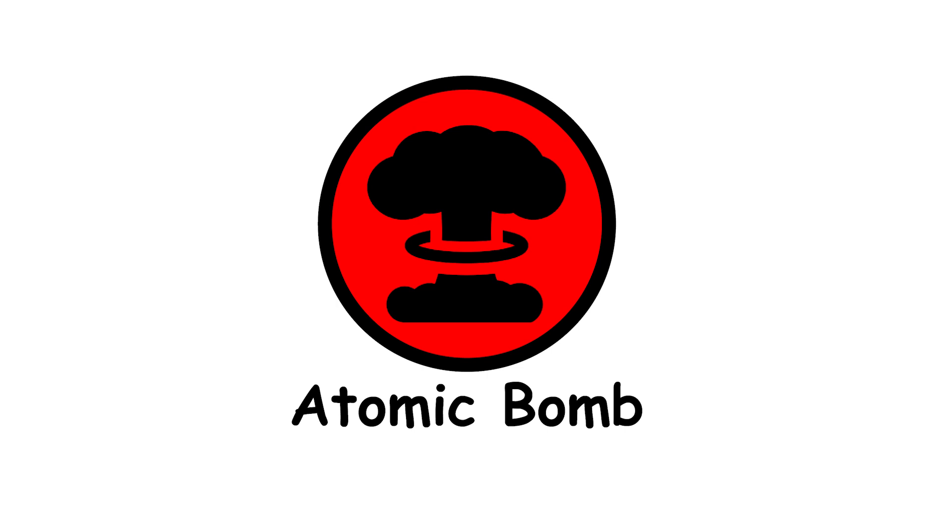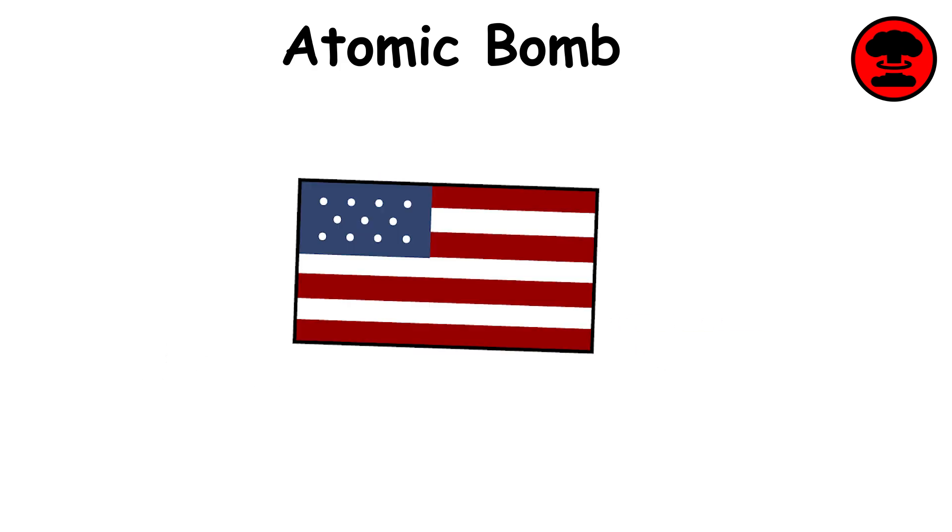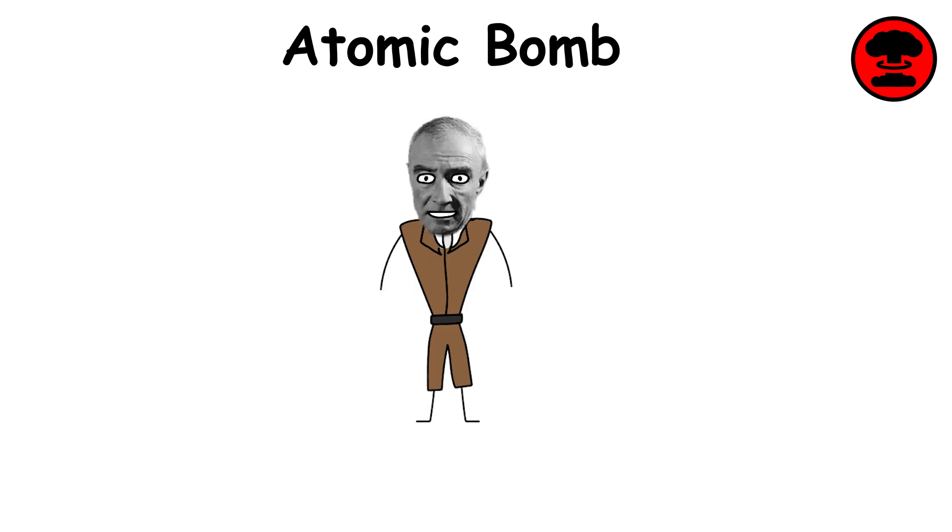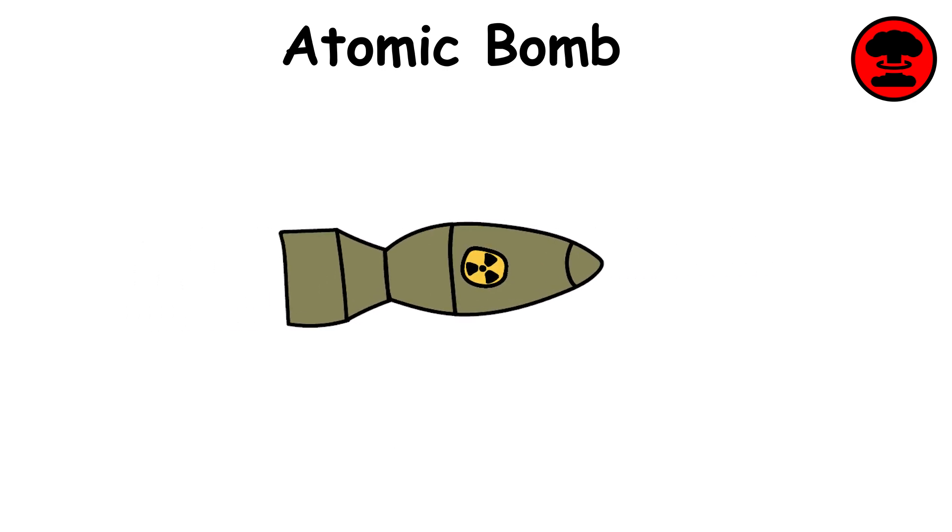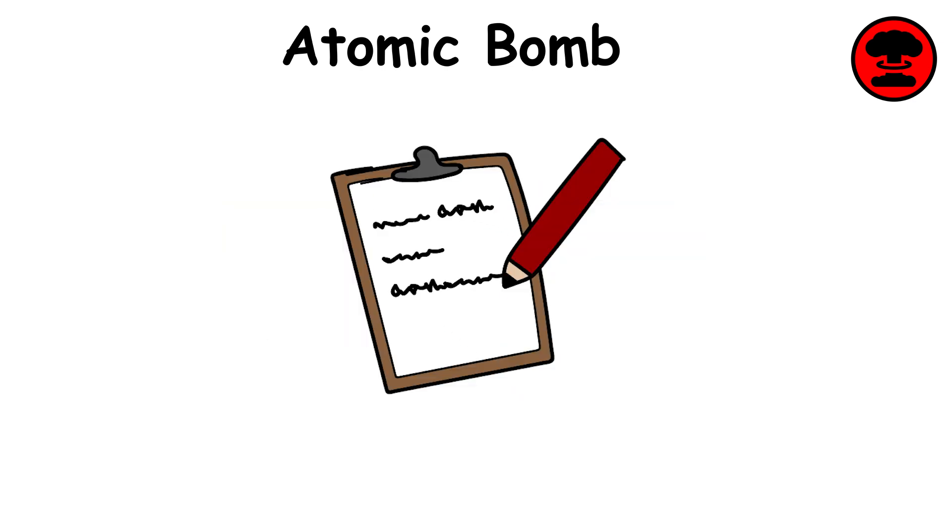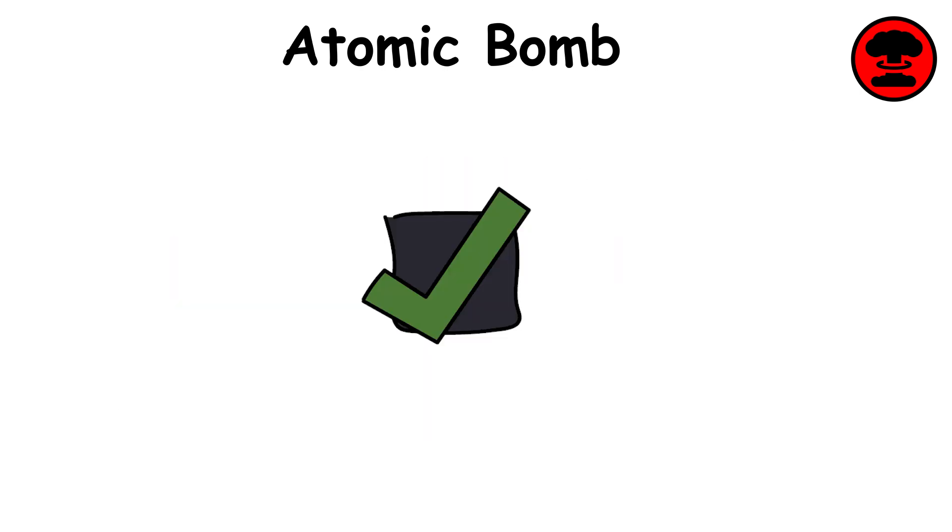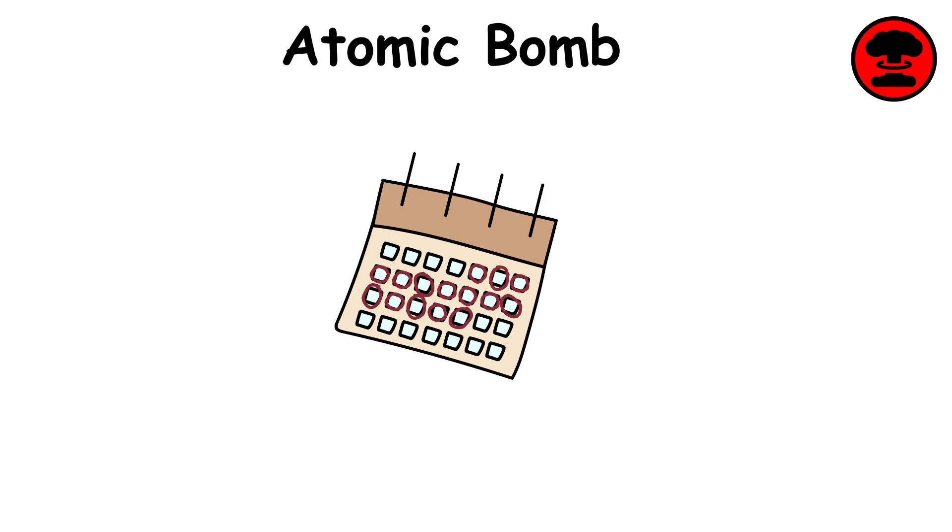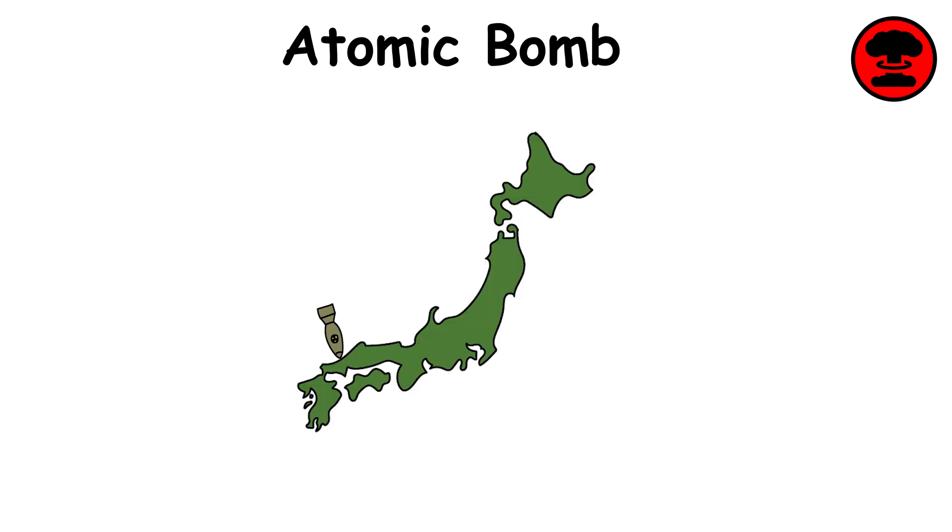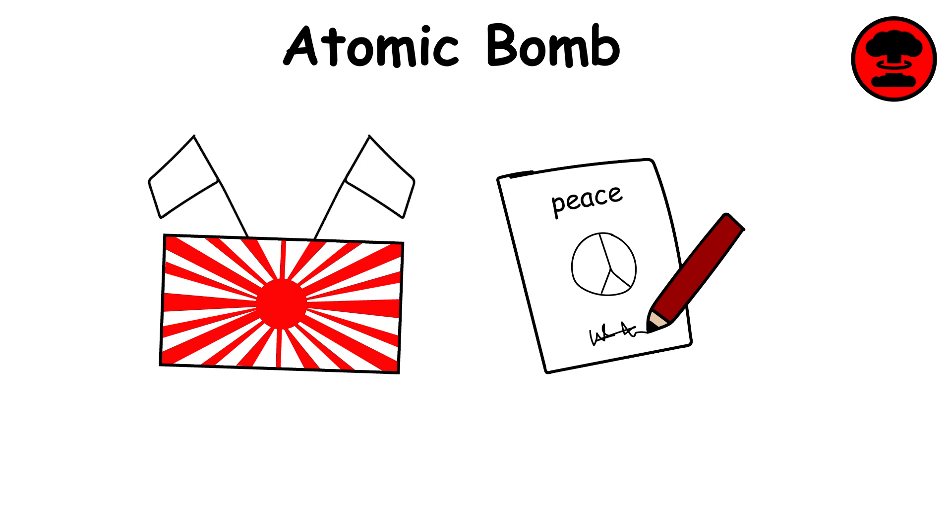Atomic bomb. The atomic bomb was developed during World War II under the U.S. government's top-secret Manhattan Project. Led by scientists like J. Robert Oppenheimer, it harnessed the immense energy released by splitting atoms of uranium or plutonium. The first test, codenamed Trinity, occurred on July 16, 1945, near Alamogordo, New Mexico, proving the weapon's devastating power. Weeks later, atomic bombs were dropped on Hiroshima and Nagasaki, leading to Japan's surrender and the end of the war.